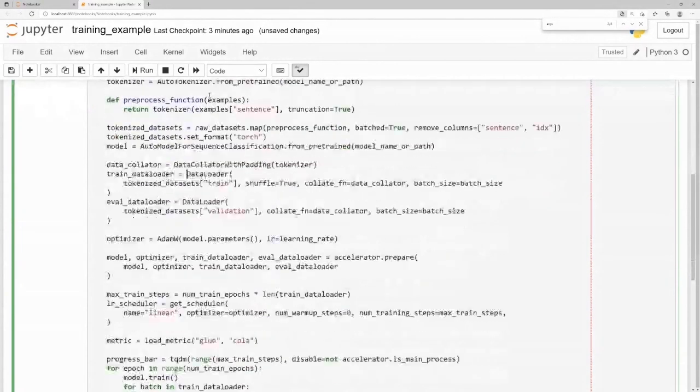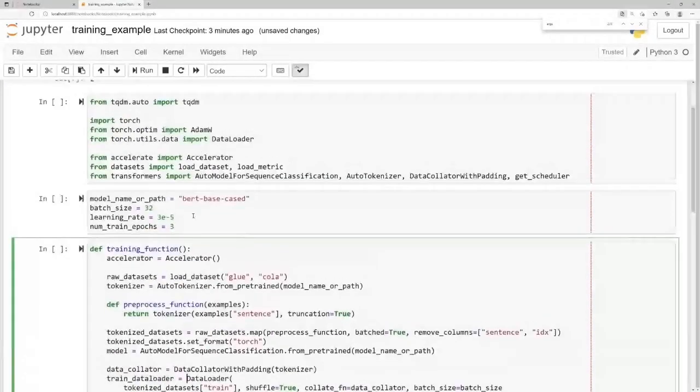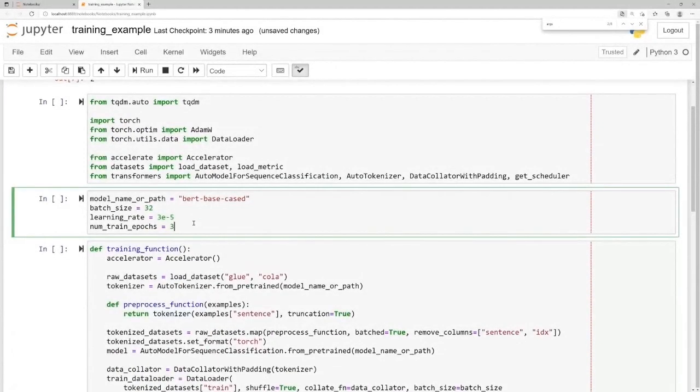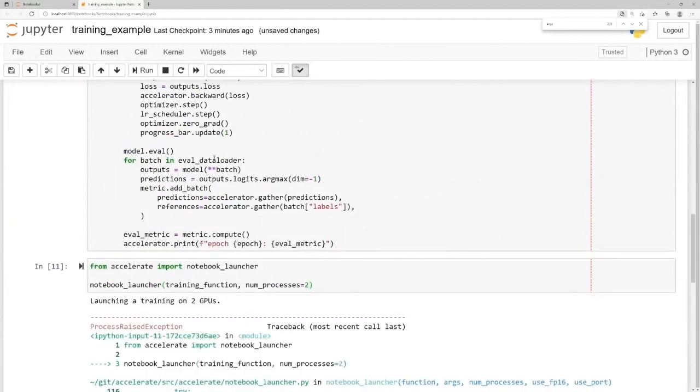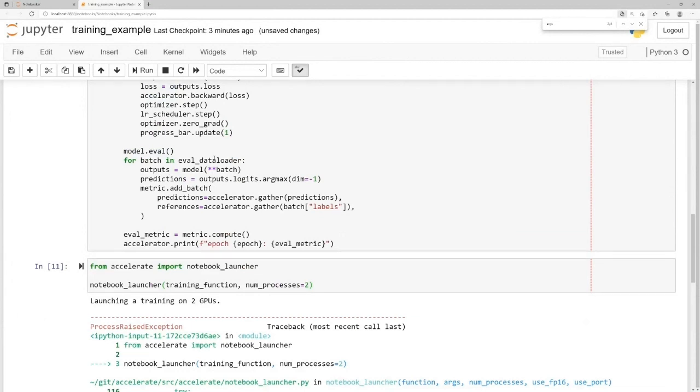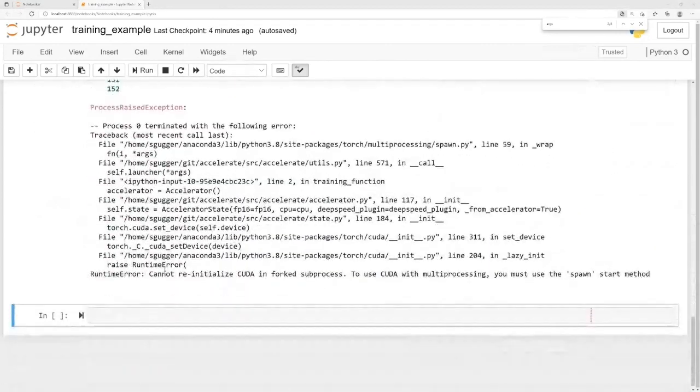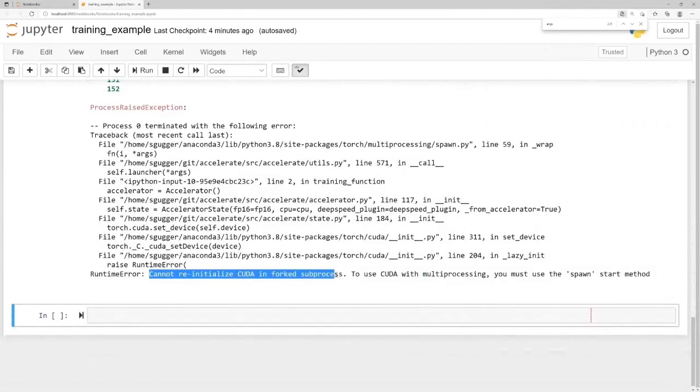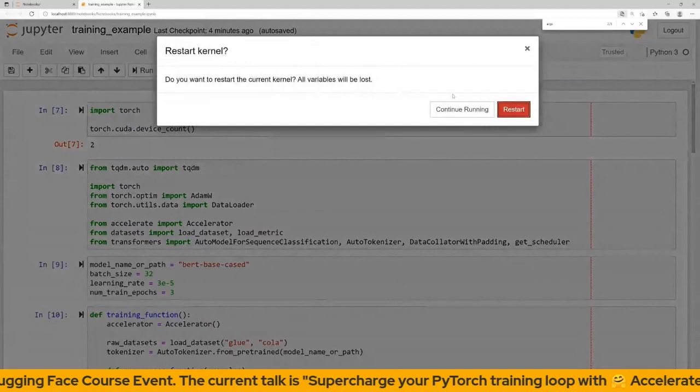Here my training function is very similar to the script I just showed you. The only difference is that I'm not using ArgParse and set all my hyperparameters in a cell. If you have executed any instruction that initializes CUDA or PyTorch XLA, you will need to restart your notebook or get an error. For instance here we asked for the number of GPUs at the very top and when trying to launch our training function, the launcher failed because CUDA was already initialized. Restarting and not executing the first cell will make everything work smoothly.